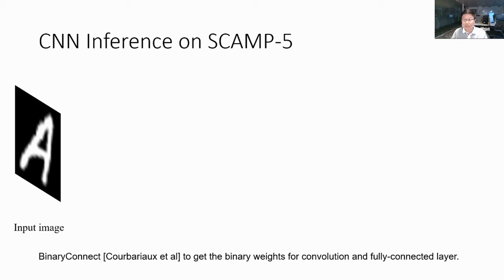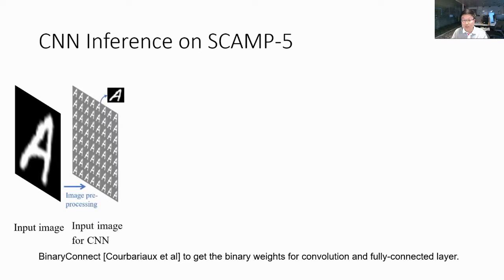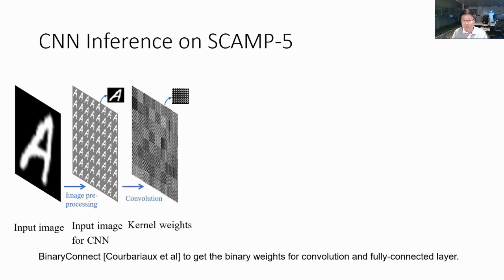We use BinaryConnect to train the binary weights for the neural network. This slide shows the inference process of a CNN on SCAMP-5. First, input images are captured into the processing elements. To execute the many convolution filters in parallel, this input image is processed by being downscaled and then replicated to fill all 256x256 processing elements. Each replicated image is associated with a different kernel filter, with 64 kernel filters arranged in line with 64 replicated image blocks.